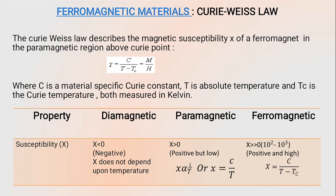The Curie-Weiss law is defined for above the Curie temperature, where there is a change in susceptibility as the material becomes paramagnetic. The equation is: χ = C / (T − Tc), where C is the Curie constant, T is the absolute temperature, and Tc is the Curie temperature. In the susceptibility table, diamagnetic materials have negative susceptibility, paramagnetic have positive, and ferromagnetic have highly positive susceptibility.